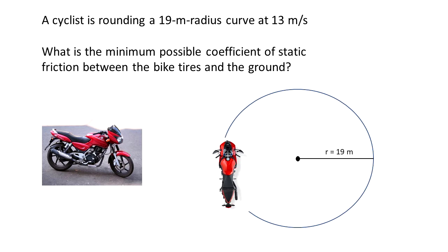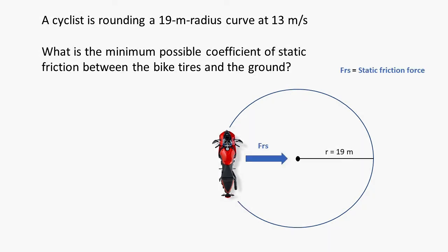We can see that we have a circular path that the bike is doing with a radius of 19 meters. There is a blue arrow always pointing to the center that represents the static friction. It is always pointing to the center no matter the position of the bike on that circular path.